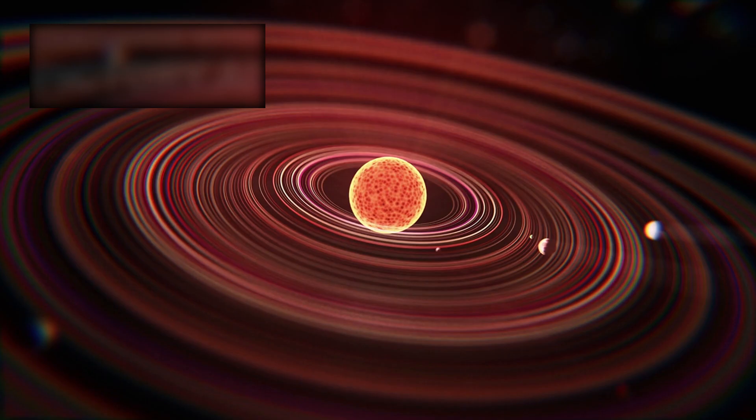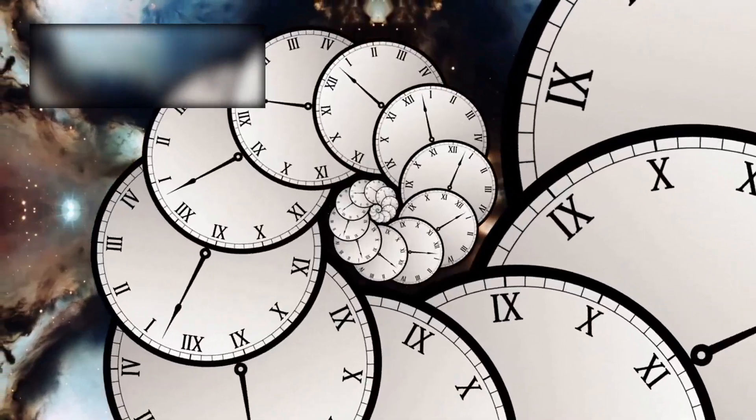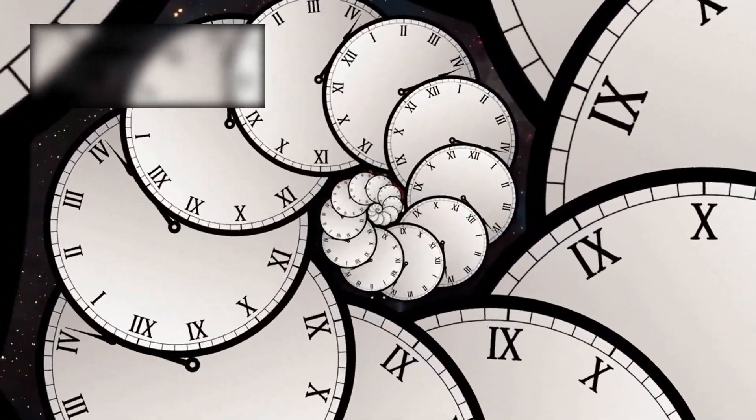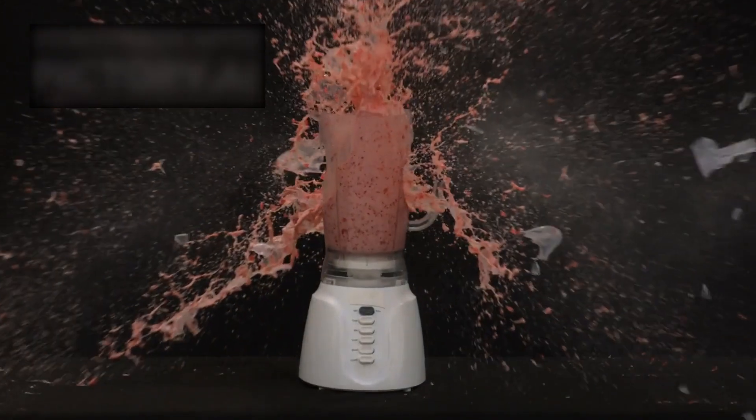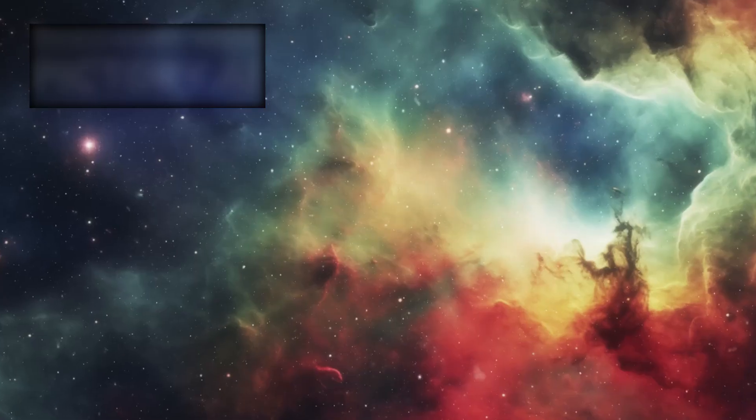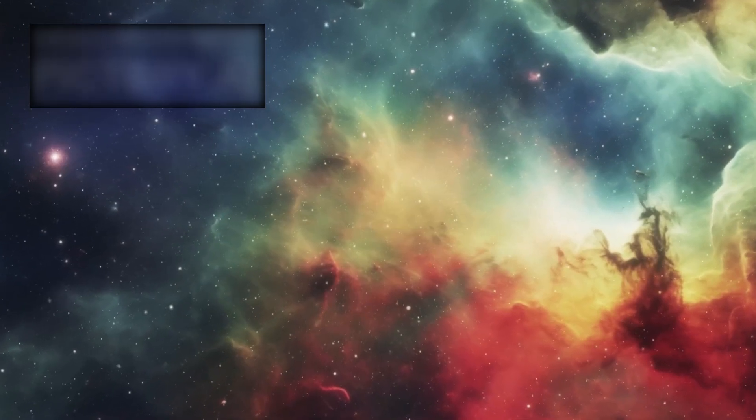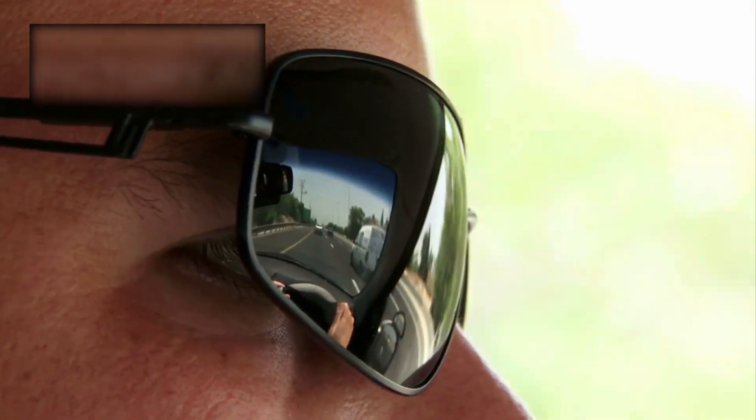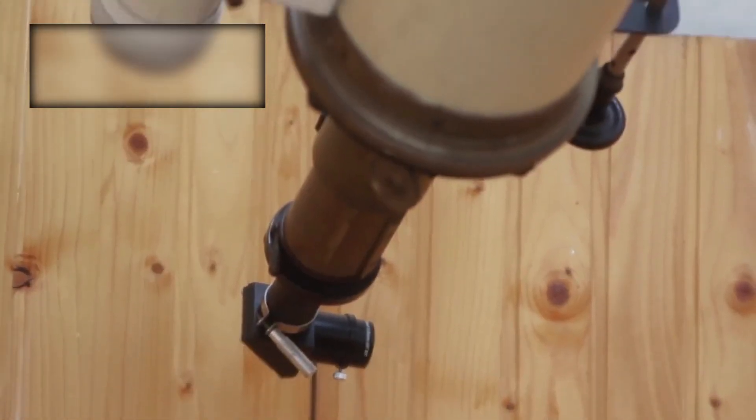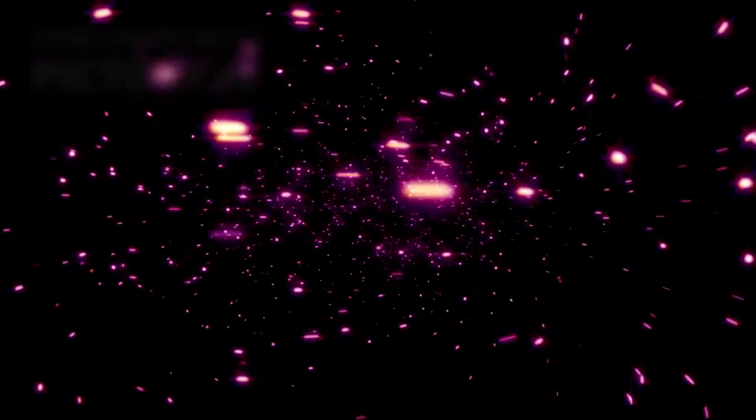And yet here they were, glimmering in galaxies that should not have had enough time to create them. It was as though the universe had already lived through entire generations of stars within only a few hundred million years after the Big Bang. The timelines didn't just feel compressed—they felt shattered. Time itself seemed to bend, as though the cosmos had hurried through its infancy, skipping stages we thought were essential. And still, Webb's mirrors kept reflecting more. Each image a window into impossible history, each photon a story of creation rewritten.